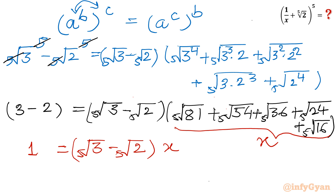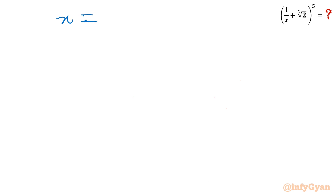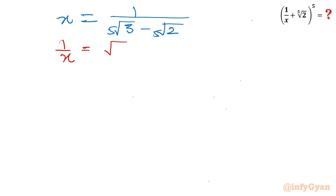Now let us divide both sides by (⁵√3 - ⁵√2). These two brackets cancel on the right-hand side, so x = 1 / (⁵√3 - ⁵√2). Taking the reciprocal of both sides gives 1/x = ⁵√3 - ⁵√2.